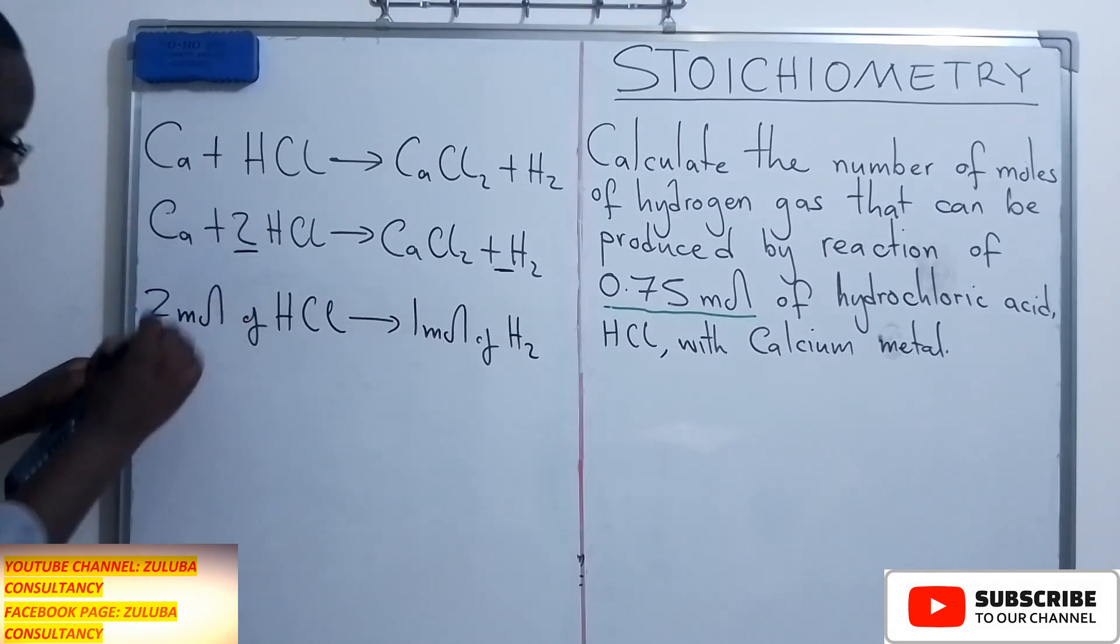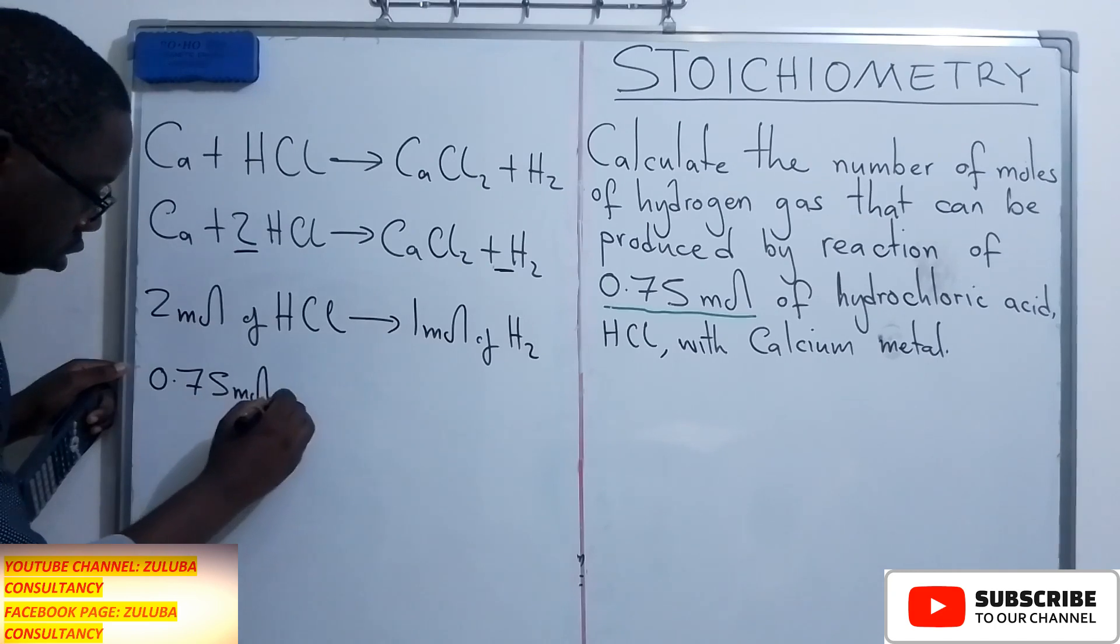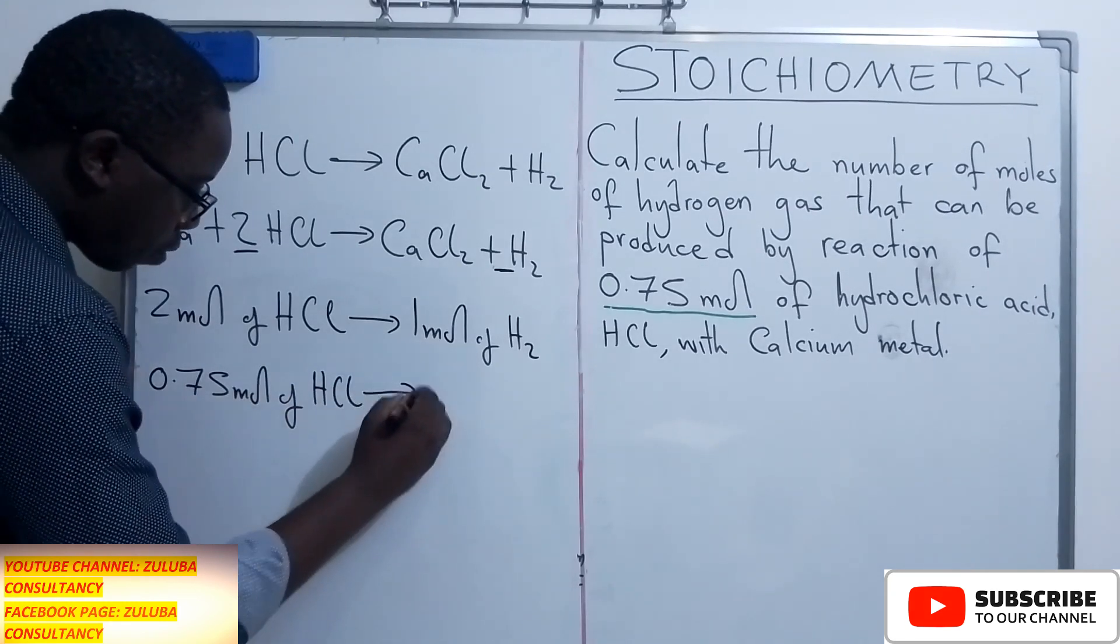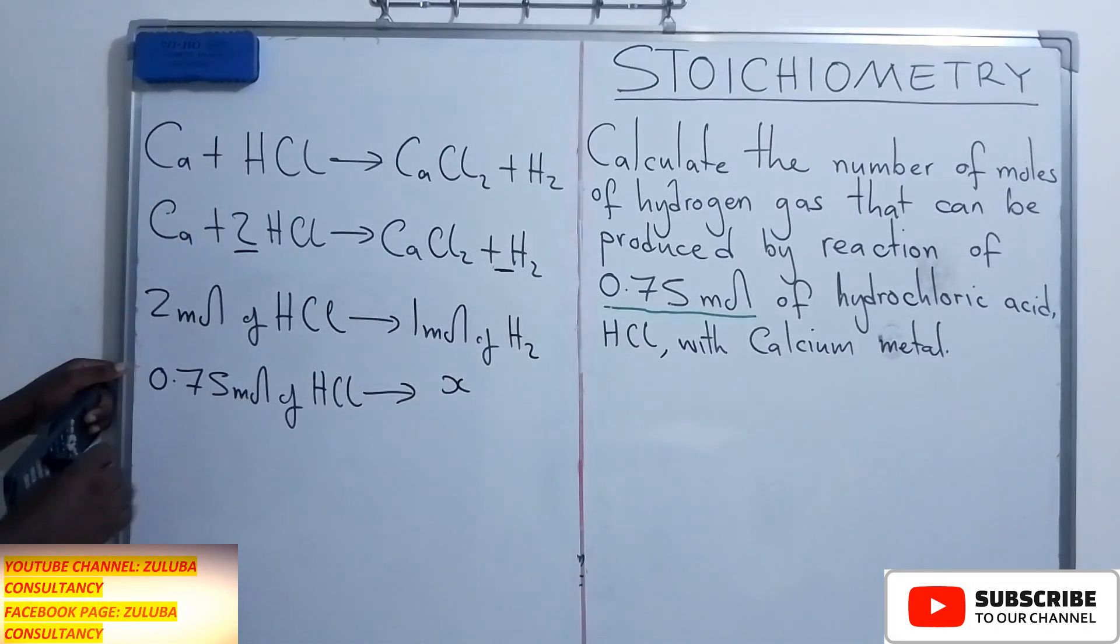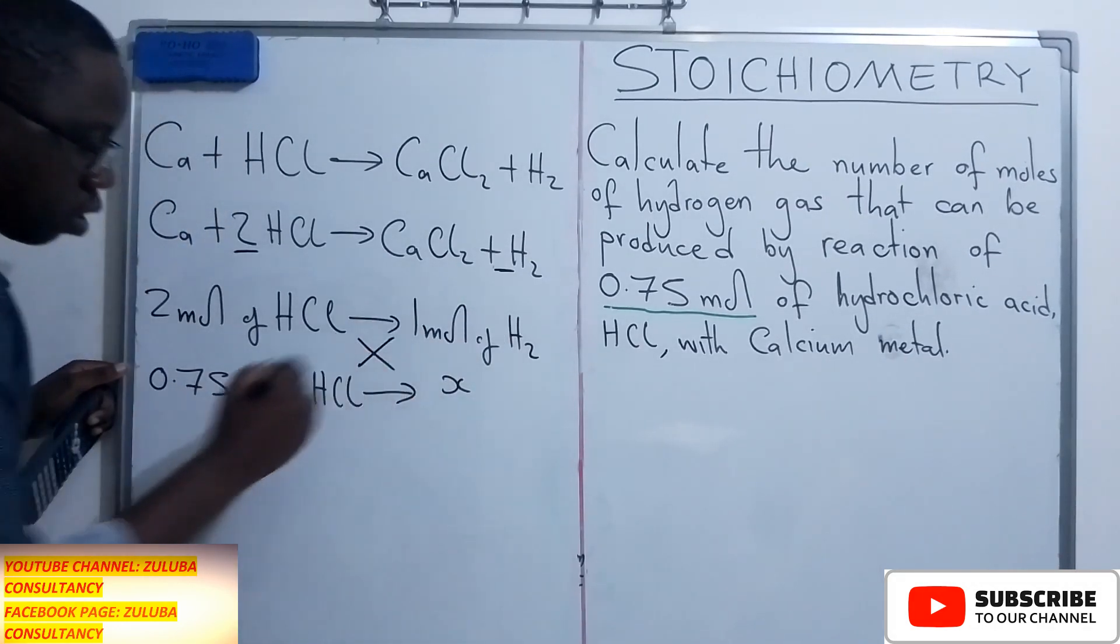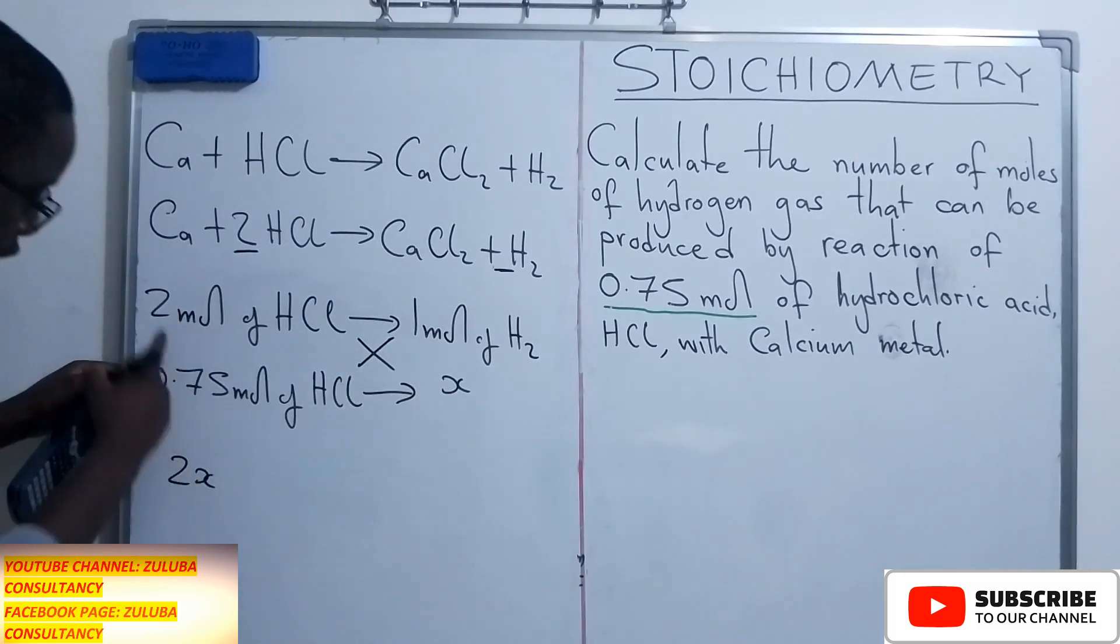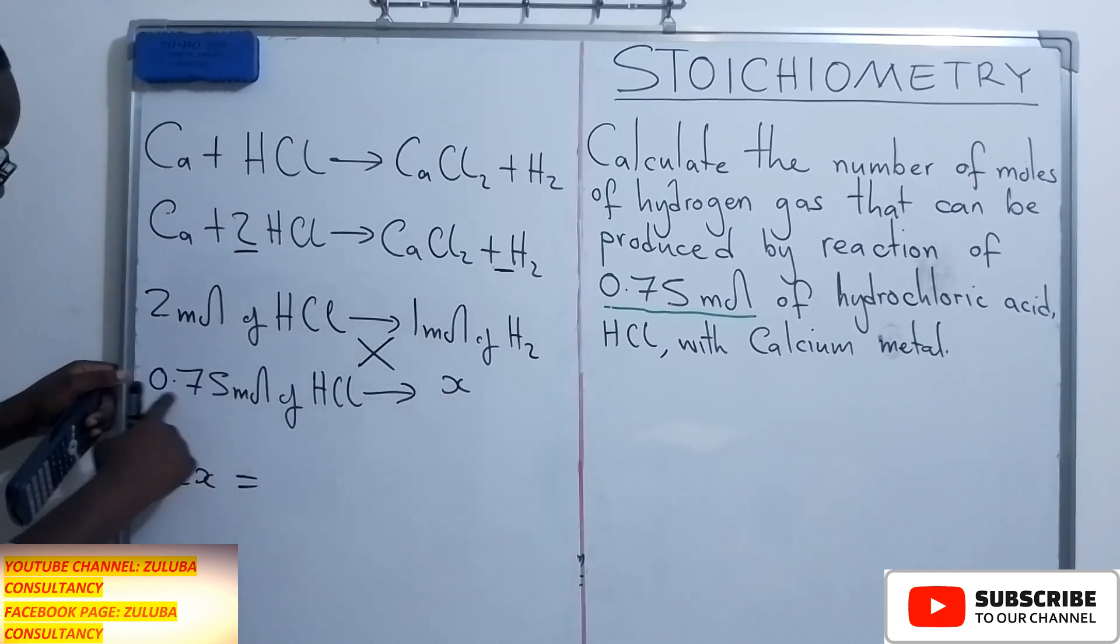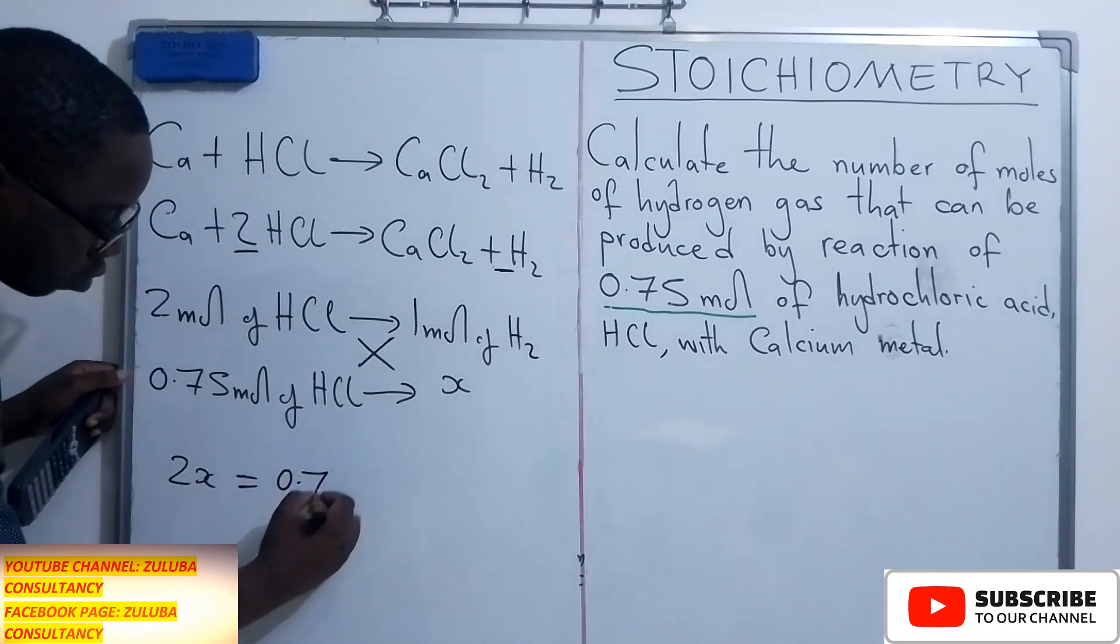So if 0.75 moles of the acid is used up, how much of the gas will be produced? Here we simply cross multiply. So we are saying 2x, that is 2 and x will be equal to 0.75 multiplied by 1 is simply 0.75.